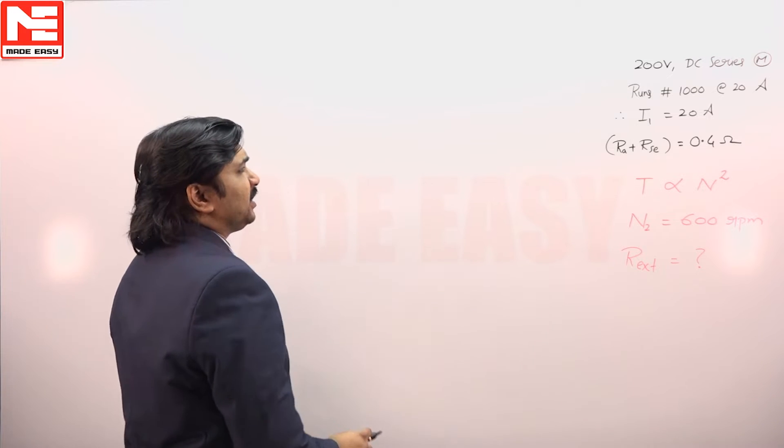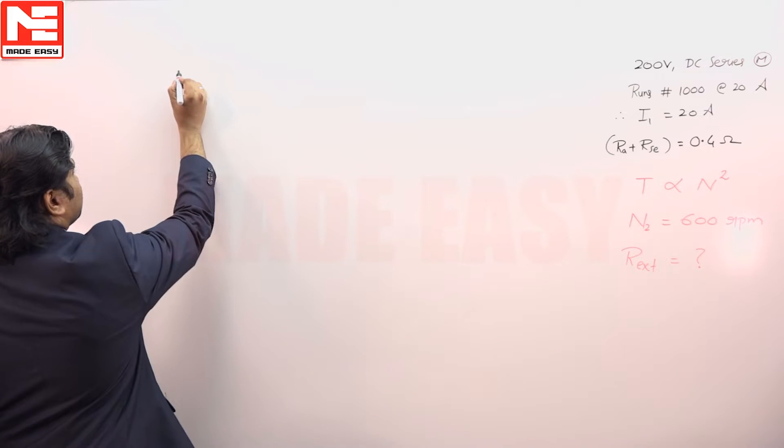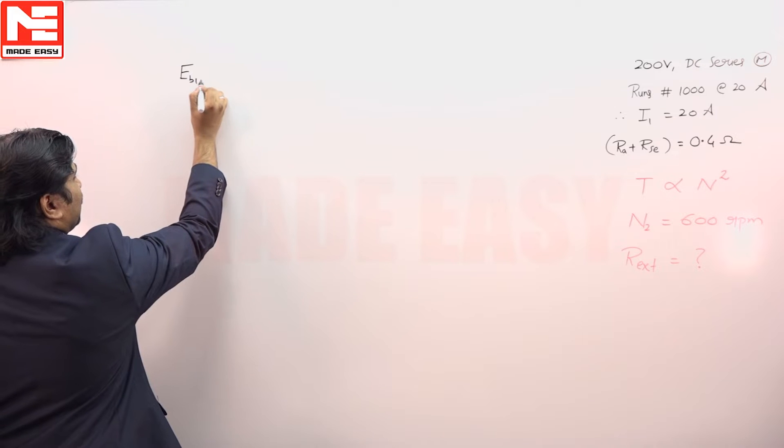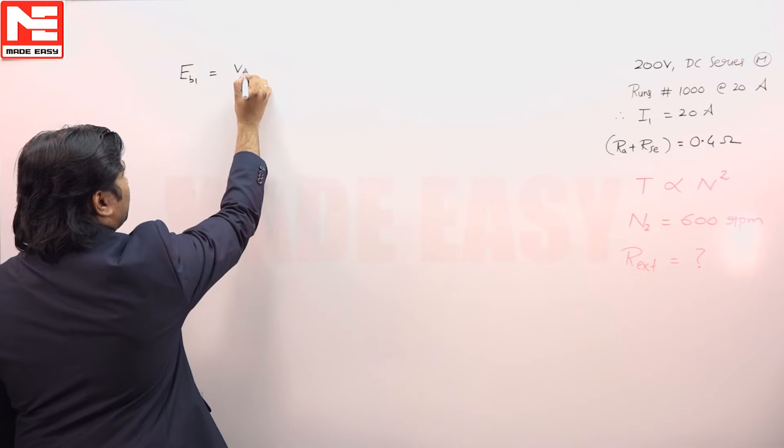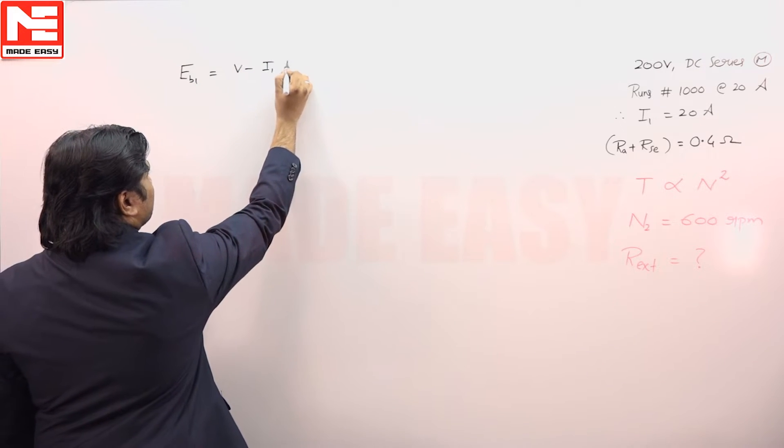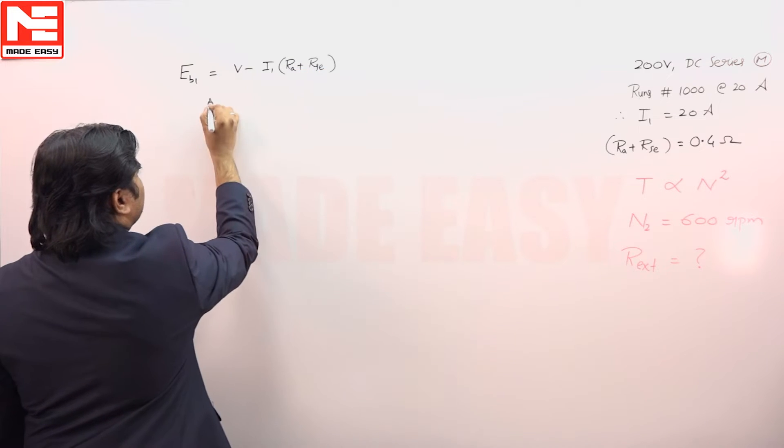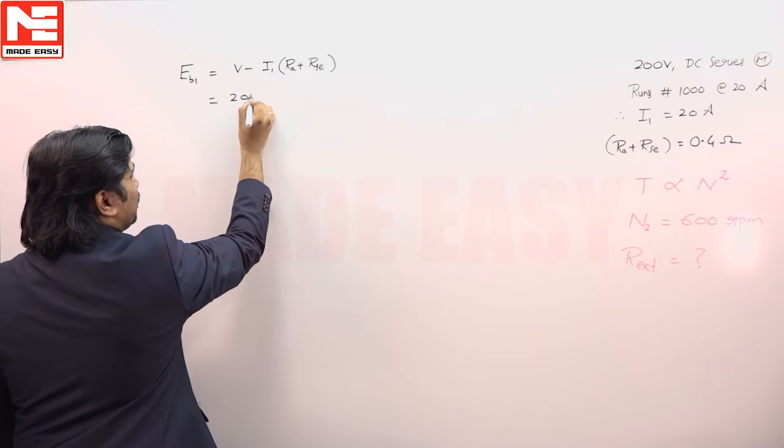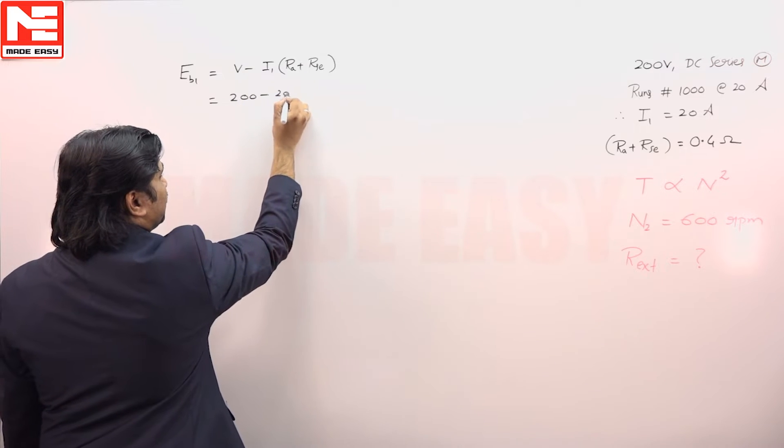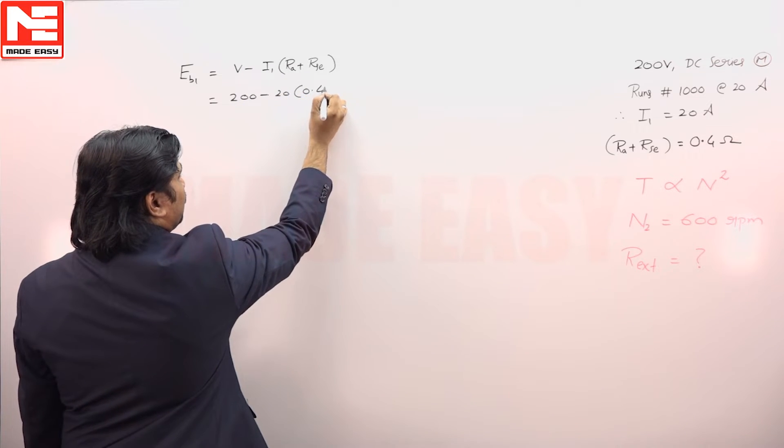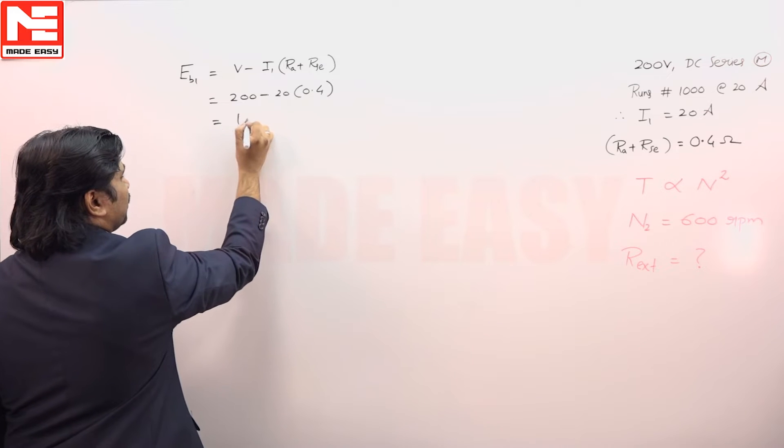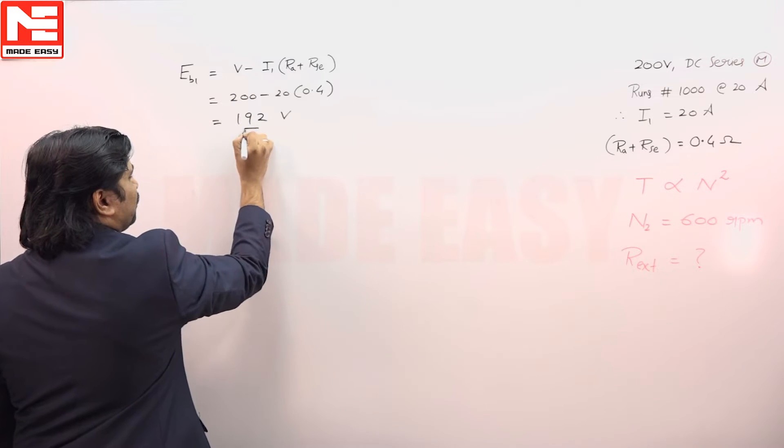First let us calculate Eb1. Eb1 is equal to V minus, that is 200 minus I1 is 20 into 0.4, that is 192 volts.